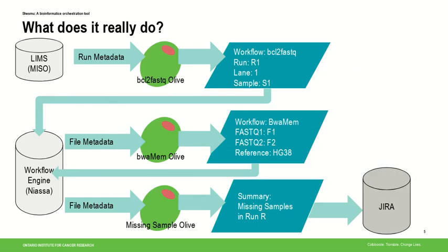As an example, our system starts with a laboratory information system called MISO, which talks to our sequencers and tracks all run information. We have a BCL-to-FASTQ Olive inside Shasmut that knows how to ingest run metadata from MISO and generate BCL-to-FASTQ workflow actions that correctly extract data from runs and prepare FASTQs.